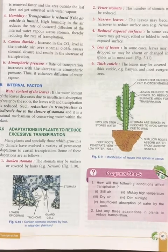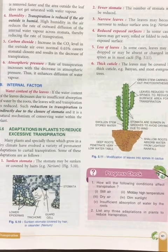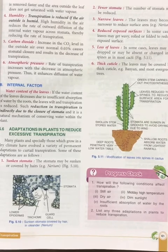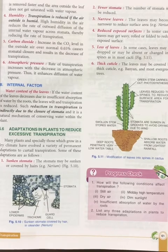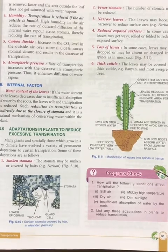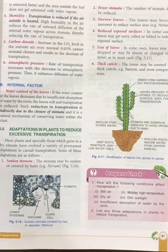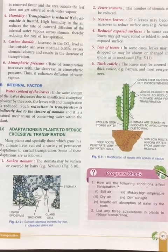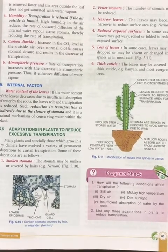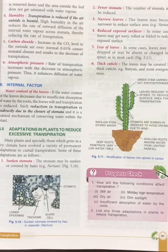The sixth adaptation is a thick cuticle. The leaves may be covered by a thick cuticle, for example in banyan and most evergreen trees. These are the main adaptations in plants to reduce transpiration.